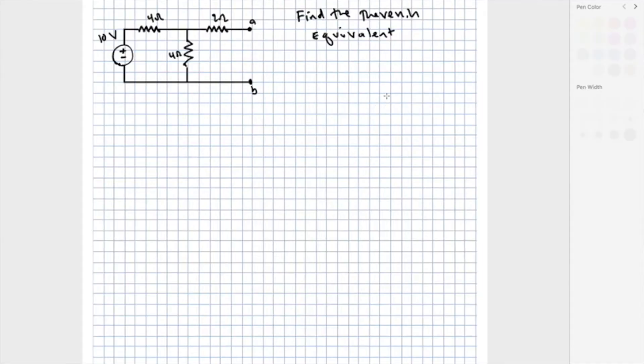To get the Thevenin equivalent, we need to find the value of the voltage source and the resistor. We find the value of the voltage source V-Thevenin by finding the open circuit voltage across the terminals. We find the resistance R-Thevenin by turning off all the sources and looking at the equivalent resistance between the terminals. Voltage sources will become short circuits, and current sources will become open circuits. To understand this better, let's do a short example of finding the Thevenin equivalent.